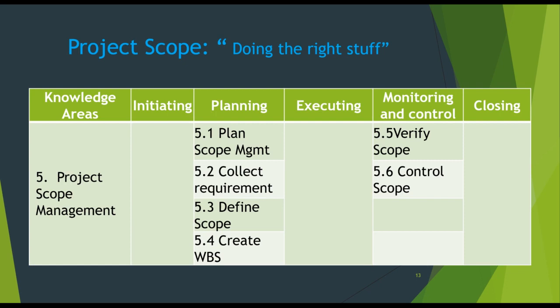Project scope — doing the right stuff — is the work that is included in the project. The process is all about making sure that everyone concerned with the project is clear about what the project is aimed at and what it includes. Scope changes alter mostly the project itself, so it is essential that the project boundaries are well defined from the beginning and are carefully monitored. Changes can occur at any point in time, but even the simplest changes can have a lasting result on the outcome. The project scope management includes six processes: plan scope management, collect requirements, define the scope, create work breakdown structure, verify or validate the scope, and control the scope.